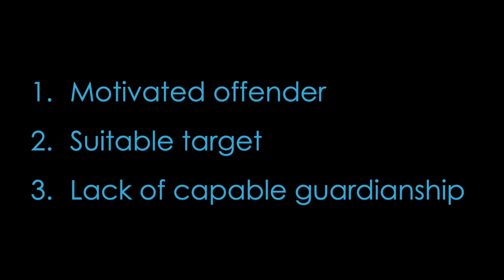Probably the most popular theory under environmental criminology would be the routine activities theory, published in 1979 by Cohen and Felson. According to routine activities theory, you need three things for a crime to occur: a motivated offender, a suitable target, and a lack of capable guardianship. It's very similar to environmental criminology, but it takes that opportunity to offend and breaks it down a little bit further.